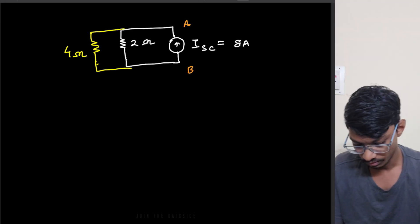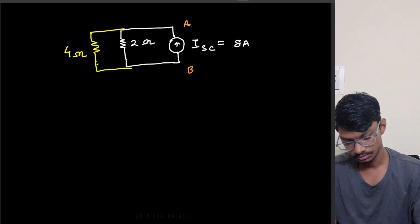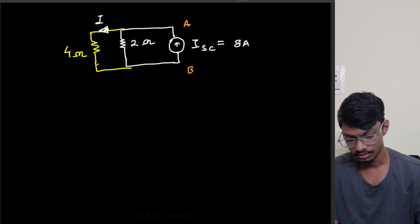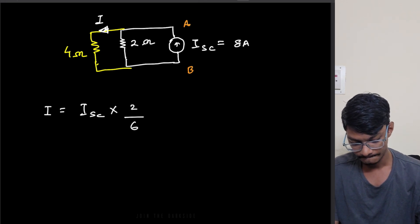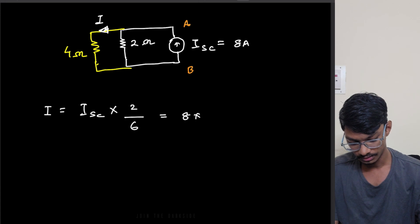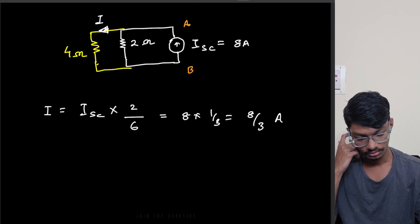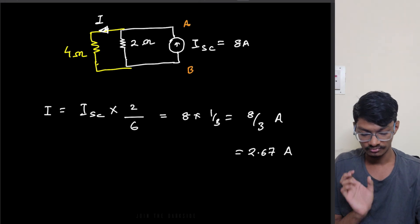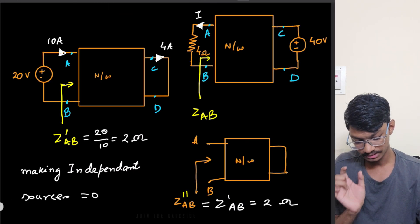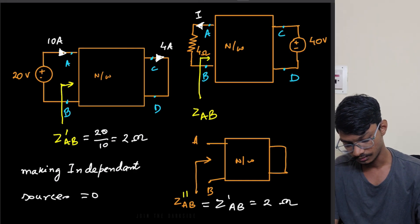We put the 4-ohm load here and find the current i that was actually asked in the question. So what is i? It simply equals Isc times 2/(2+4), which equals 8 times 1/3, giving 8/3 amps, approximately 2.67 amps. So the answer for i is 2.67 amps. This is the first method, using the reciprocity theorem and Norton's theorem.